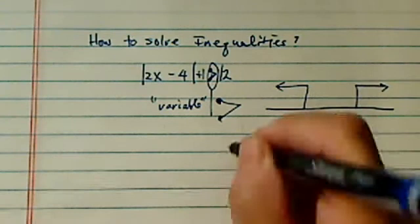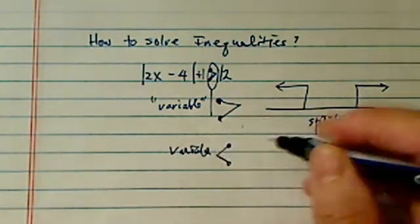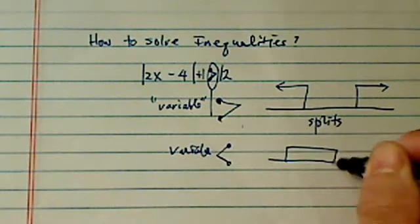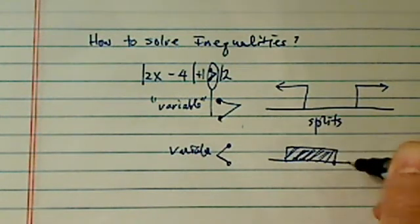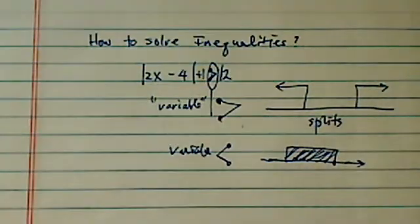Of course, if it's smaller than variable, if it's smaller than, it's always a sandwich. I call my students this almost a chipotle sandwich. Small sandwich and big splits.